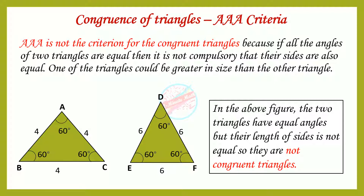AAA criteria: This is not a criteria for congruent triangles, because if all angles of two triangles are equal, it is not compulsory that their sides are also equal. One of the triangles could be greater in size than the other. Here we can see that the two triangles have equal angles of 60 degrees, but their side lengths are not equal. Therefore, they are not congruent triangles.